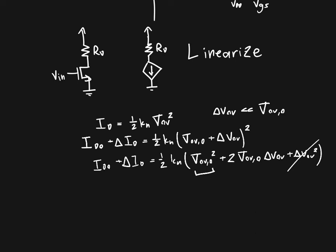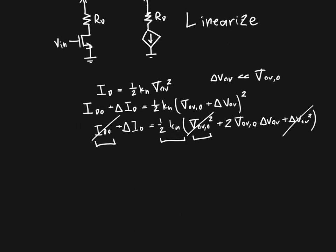This first term, if we multiply it by these previous terms, is nothing but the DC value of the current. So we can cancel those two terms, and we're left with delta ID equals, approximately equals, but we're engineers, equals 1/2 kN times 2 overdrive voltage zero times delta V overdrive. If we cancel the two, it's just equal to kN times the overdrive voltage at its DC value times the delta overdrive voltage.